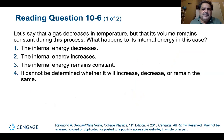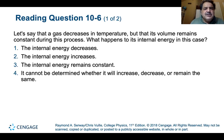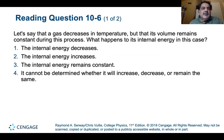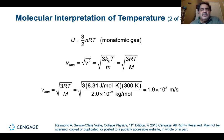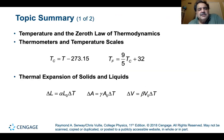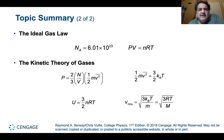If a gas decreases in temperature at constant volume, what happens to its internal energy? Since U = (3/2)nRT, as T decreases, the internal energy decreases as well. Here are summary slides with the important equations covered in Chapter 10 — and that's it for Chapter 10.